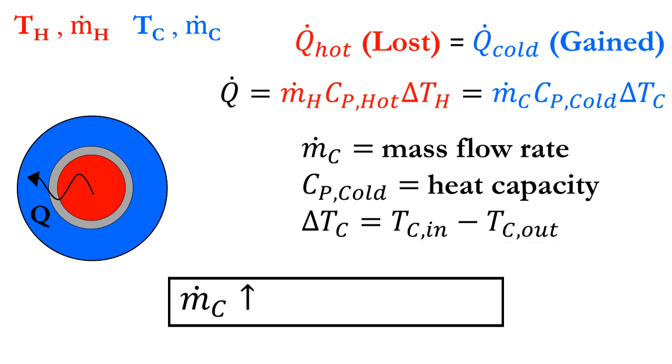Increasing the flow rate means that the temperature change must decrease, leading to a lower outlet temperature.